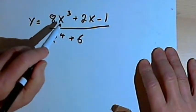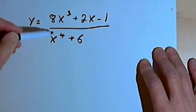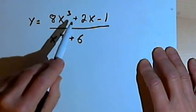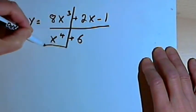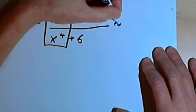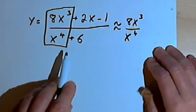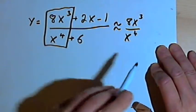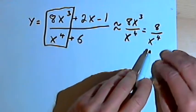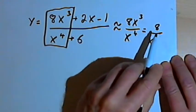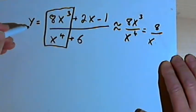Here's another example: y equals 8x to the third plus 2x minus 1 over x to the fourth plus 6. Looking at the first term in the numerator and denominator to find the degree of each — I've got a third degree, 8x to the third, over a fourth degree. So the numerator has a lower degree than the denominator. This function will equal approximately 8x to the third over x to the fourth, which reduces to 8 over x. As x gets very large, even though I have an 8 in the numerator, the fraction will still become very, very small. So the horizontal asymptote for this one is also zero.